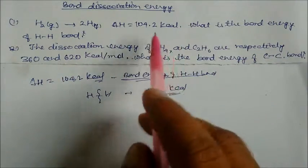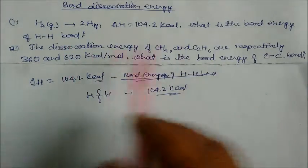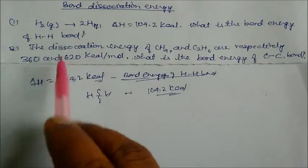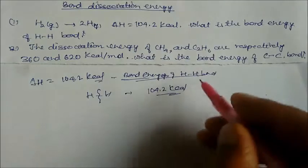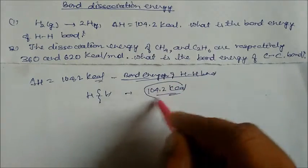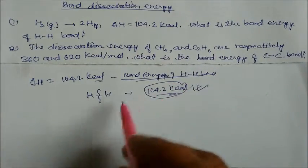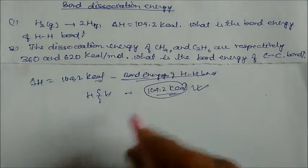This comes from the definition. Bond energy of hydrogen-hydrogen is 104.2 kilocalorie. So this is the answer — this is the bond energy of hydrogen-hydrogen atoms.